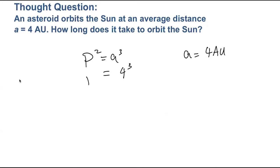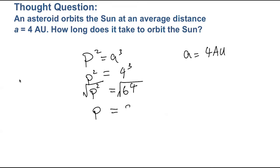So this is going to be four cubed equals p squared. Four cubed is just four times four times four. Four times four is 16, four times 16 is 64. So we get p squared equals 64. How do we get p by itself? We take the square root of both sides. The square root of p squared is p and the square root of 64 is eight. Because we've plugged in astronomical units, the units on this period are years. So we have an asteroid orbiting at four astronomical units — it will take eight years to make one complete orbit around the sun, no matter what its eccentricity looks like.